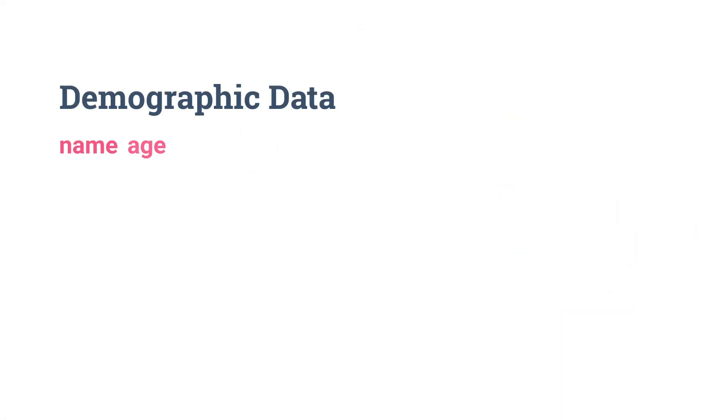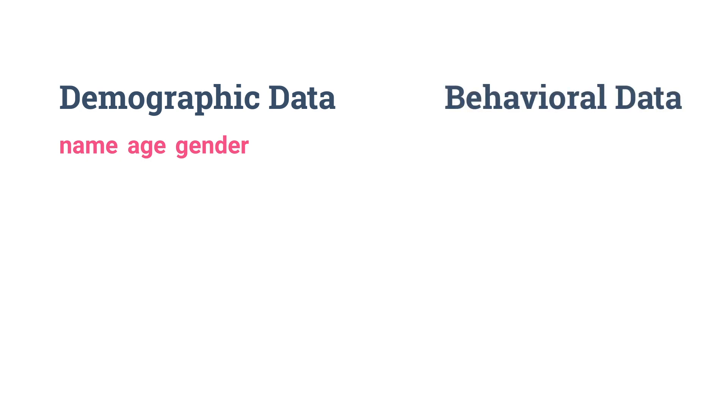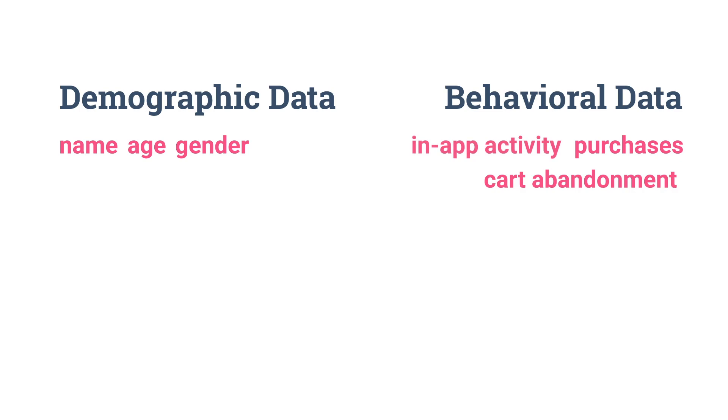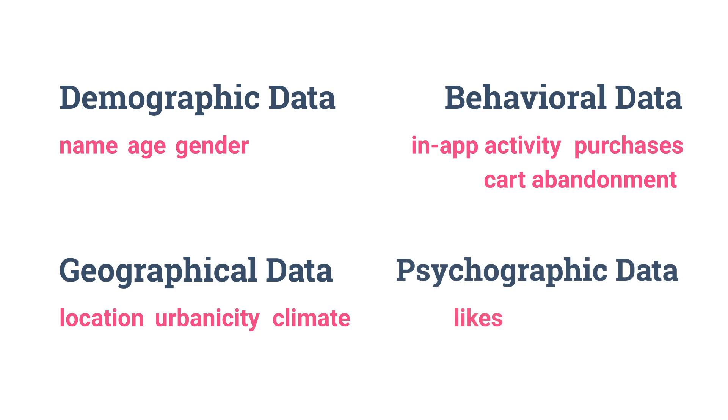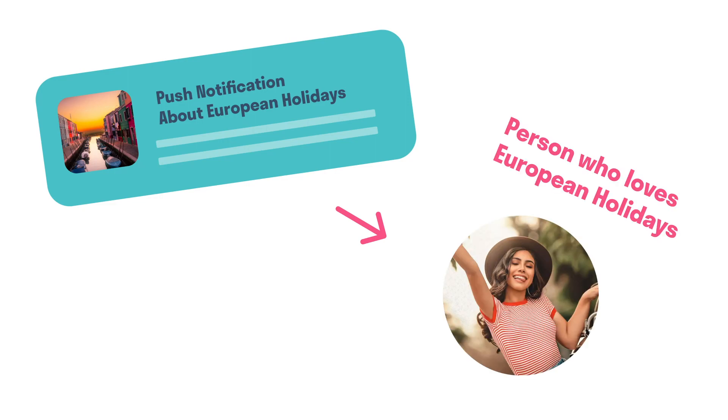Enter segmentation. Audience segmentation is the process of dividing your data into manageable, logical groups based on various shared characteristics. You can segment your audience based on four key factors: first, demographic data — name, age, gender, etc.; second, behavioural data — purchases, cart abandonment, in-app activity; third, geographical data — location, urbanicity, climate, and more; and lastly, psychographic data — your audience's likes, dislikes, values, and opinions. Segmented campaigns produce more conversions than non-segmented, spray-and-pray methods of communication, because segmenting your audiences acknowledges that every user is different and delivers content that is both meaningful and valuable at each stage of the consumer journey.